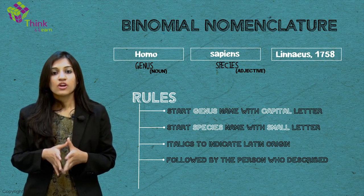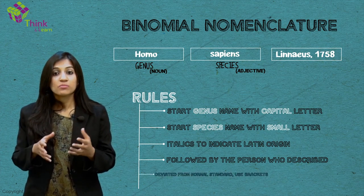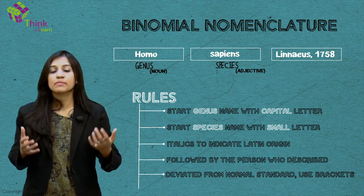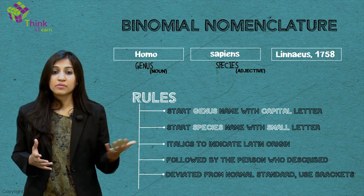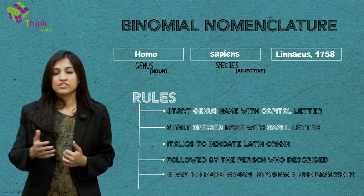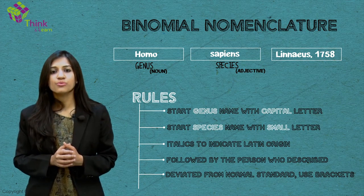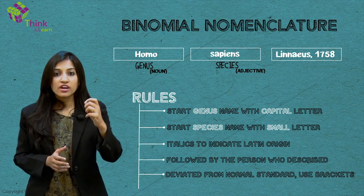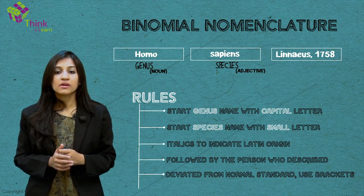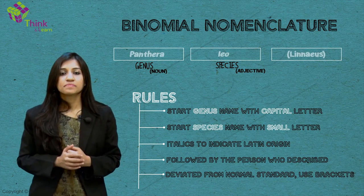An organism which deviates from normal standards may be discovered, or a species may be transferred to another genus. In that case, what do you do? The first author's name is given in brackets.